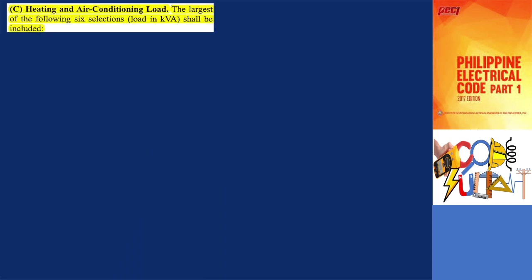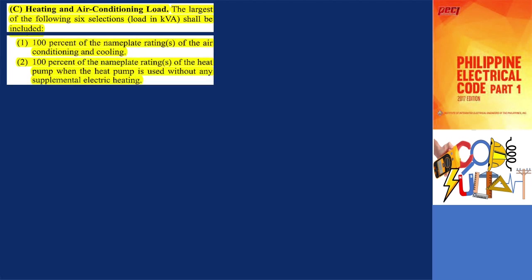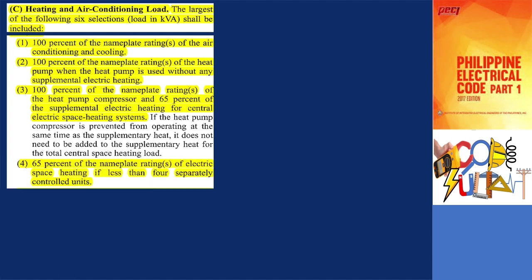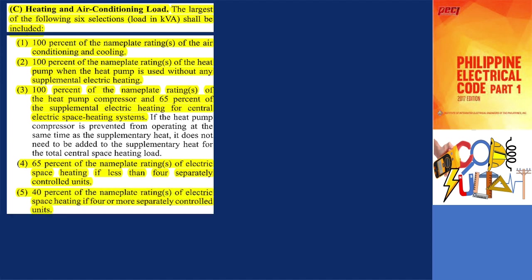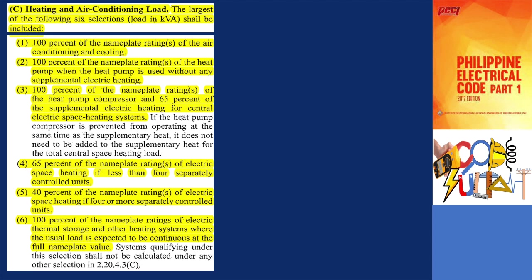The second step: heating and air conditioning load — include the larger of items 1 through 6. Air conditioning equipment: 100%. Heat pump compressor without supplemental heating: 100%. Heat pump compressor and supplemental heating: 100% of the nameplate rating of the heat pump compressor and 65% of the supplemental electric heating for central electric space heating systems. If the control circuit is designed so that the heat pump compressor cannot run at the same time as the supplementary heat, omit the compressor. Space heating units, 3 or fewer separately controlled units: 65%. Space heating units, 4 or more separately controlled units: 40%. Thermal storage heating: 100%.